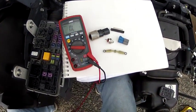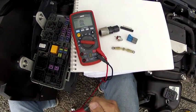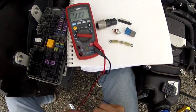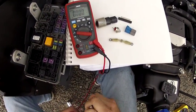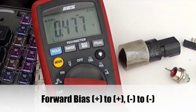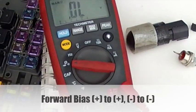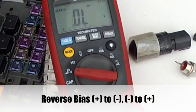If we read OL in both directions, it would be open and it would be broken. And if we read zero in both directions, it would be shorted and it would be broken. So the only correct answer is half a volt in one direction and OL in the other.